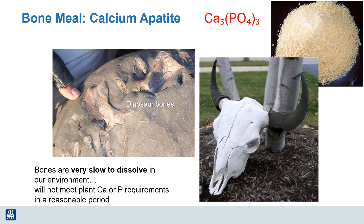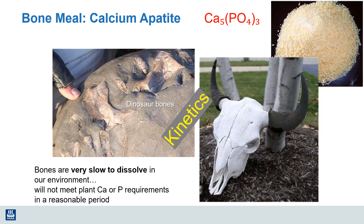Old soils that are highly weathered or formed from parent materials low in calcium have much less plant-available calcium. An example of a geologically stable calcium mineral is calcium apatite — the calcium mineral in bone. This is very slow to dissolve, which is why we can still find dinosaur bones embedded in rocks after such long periods of time. Bone meal is sometimes recommended as a phosphorus source for organic agriculture, but it's very slow to dissolve unless ground to a fine powder and special soil conditions favor its dissolution. So how fast that calcium dissolves is a major factor, not just the presence of calcium.